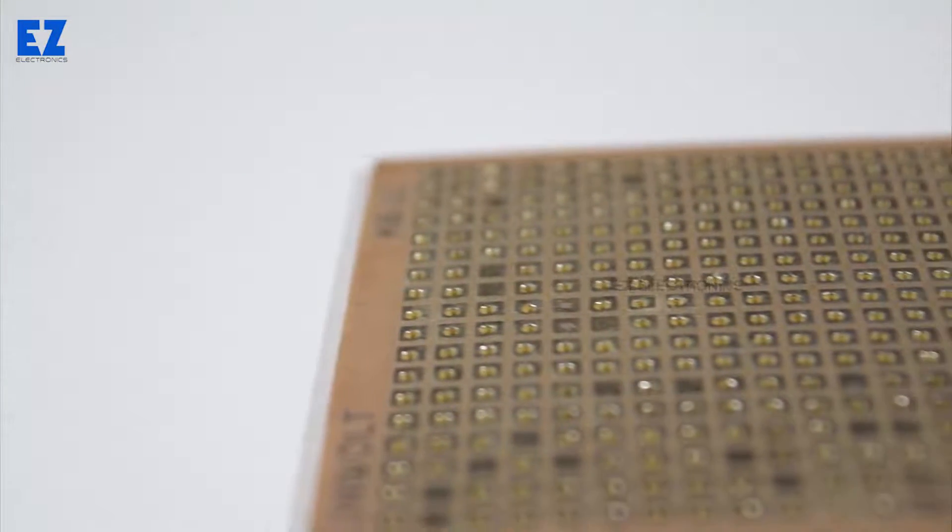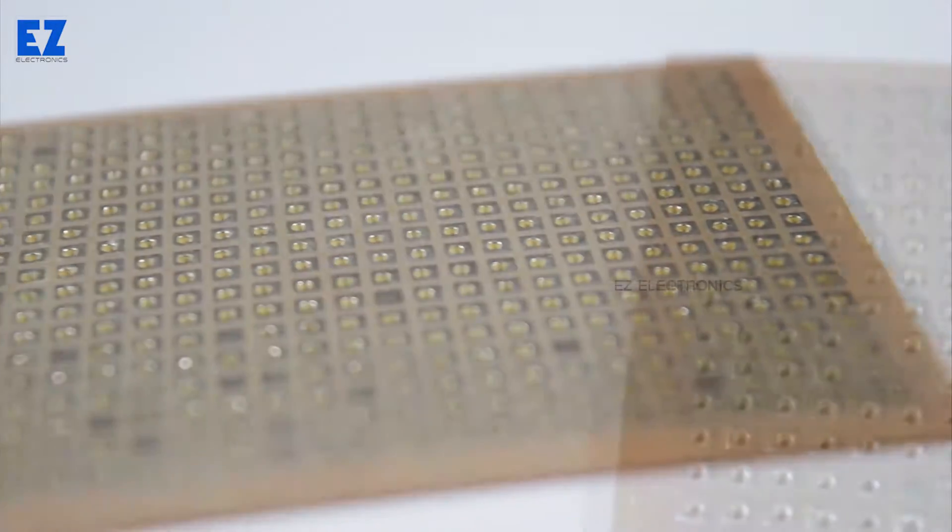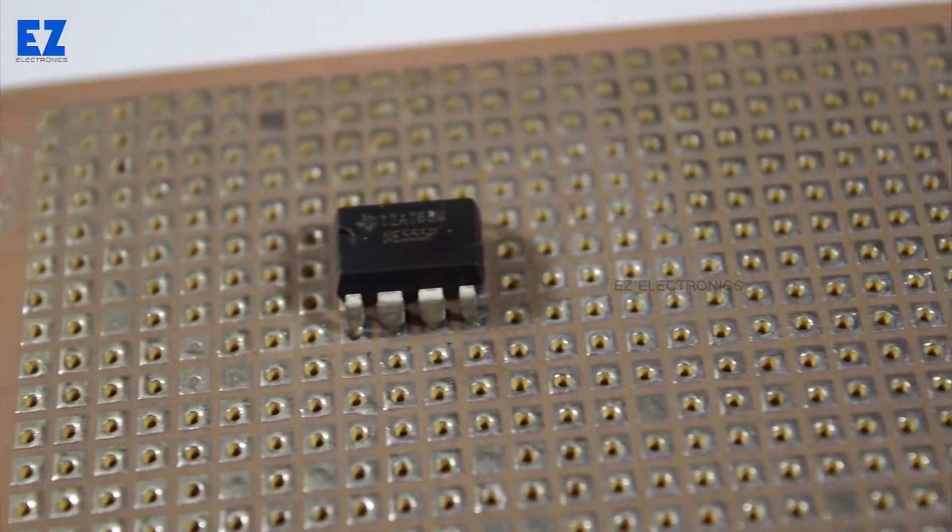A perfboard is just like a breadboard in which the holes are not connected to each other. It has a layer of copper pad around the holes to solder the component leads and make the connections. The holes have space such that a DIP IC would fit perfectly in it.